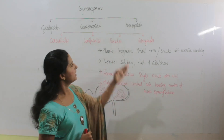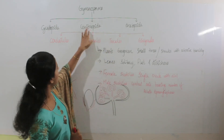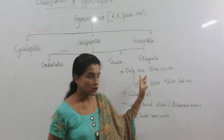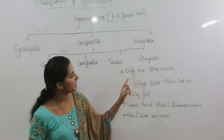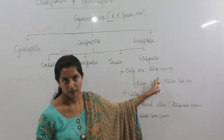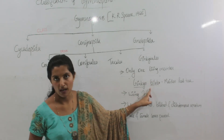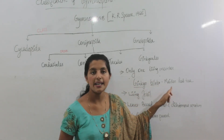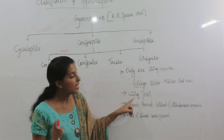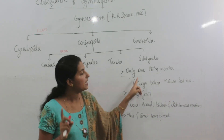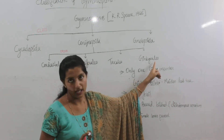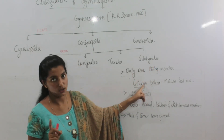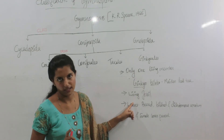The last order in class Coniferopsida is Ginkgoales. In the order Ginkgoales, there is only one living member — Ginkgo biloba. The common name of Ginkgo biloba is maidenhair tree. Because only one living member exists in this order, this plant is known as the living fossil.